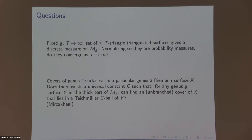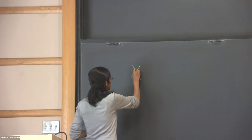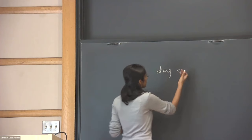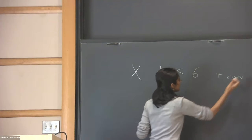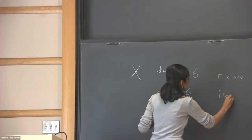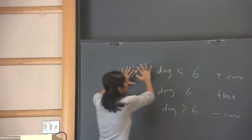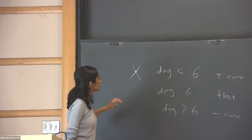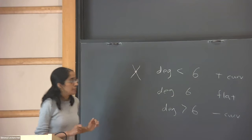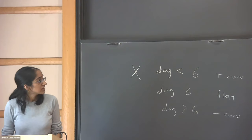What causes problems is when triangulations have locally positive curvature. You can think about the degree of a triangulation vertex: if the degree is less than six it's like positive curvature, degree six looks like flat, and greater than six is negative curvature. If you just get rid of the positive curvature vertices, it's pretty clear that there's a limit; but as long as you allow them, you have a problem.